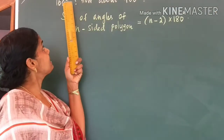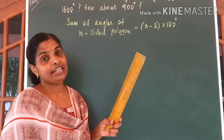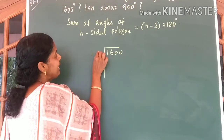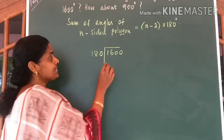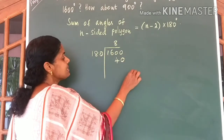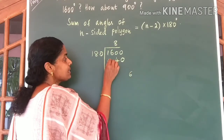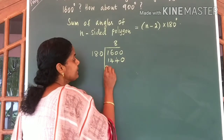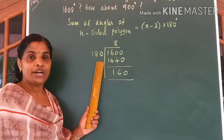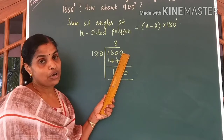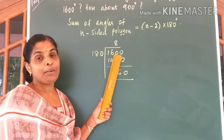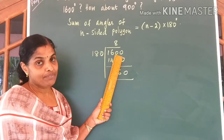To find out that, let us divide 1600 by 180. If you divide 1600 by 180, you can work through the division and find that the remainder is 160. From this, what did you understand? 1600 is not a multiple of 180. So, we can say 1600 cannot be the sum of angles of a polygon.